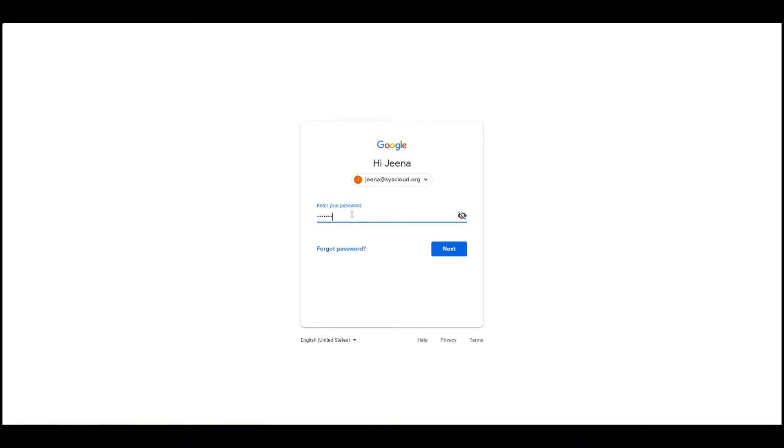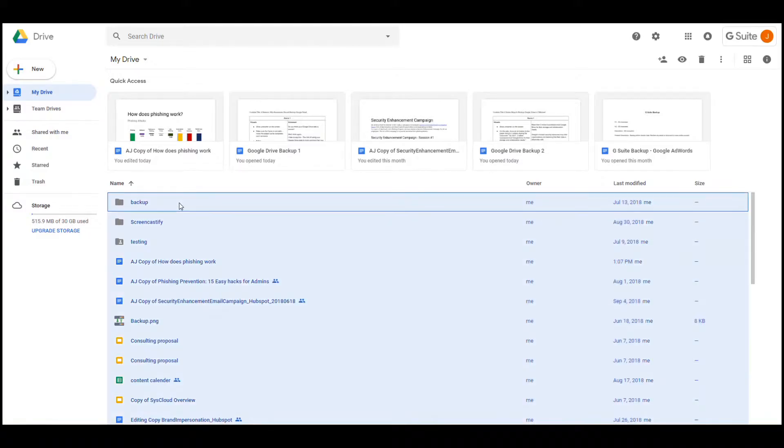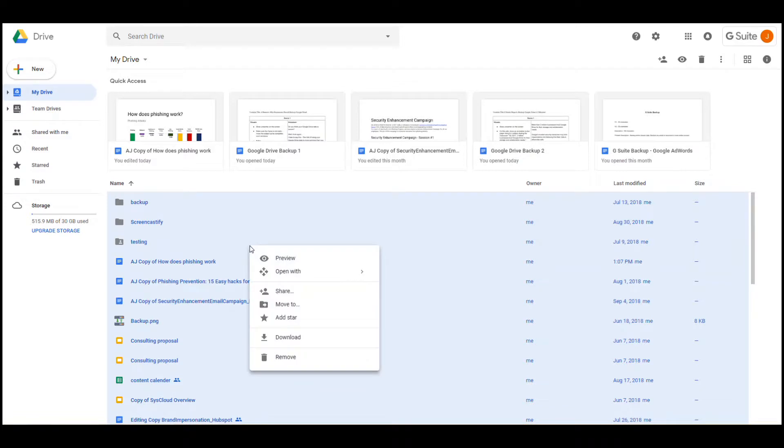Here's your first option. You can make a copy of Google Drive data with just a few clicks right now. Here's how to do it: Log into your Google Drive, hold the Ctrl key on your keyboard and press the A button to select all the files, then right-click and select the download option.